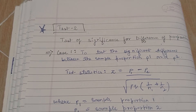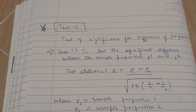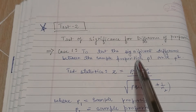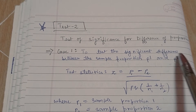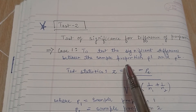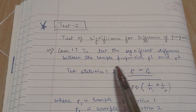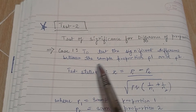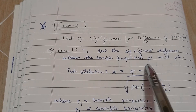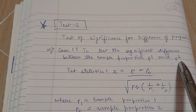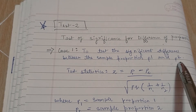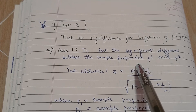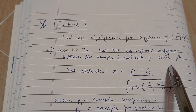Welcome. In today's lecture we would be starting with Test 2, that is the test of significance for difference of proportions. There are three cases. In the first case, we test the significance of the difference between sample proportions p1 and p2 — here we don't have the population proportion capital P, we have two sample proportions p1 and p2.